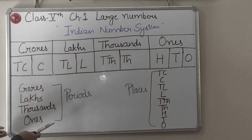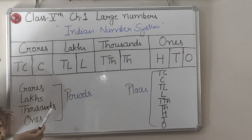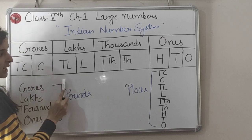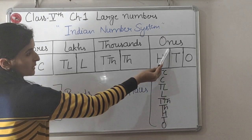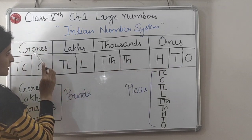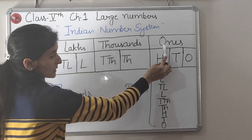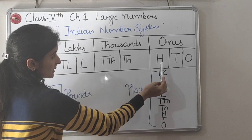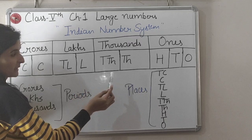Now let's start with the Indian Numbers System. In Indian Numbers System, the first nine places are divided into four periods. First is ones, then thousands, lakhs, and crores. The very first period, that is ones, is divided into three places: ones, tens, and hundreds. After that, all other periods are divided into two places each.